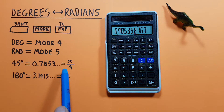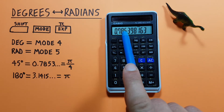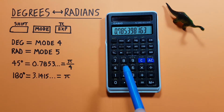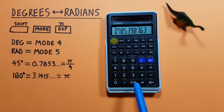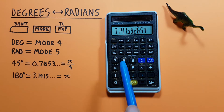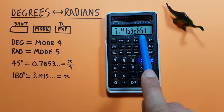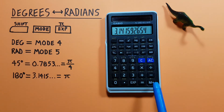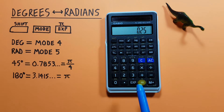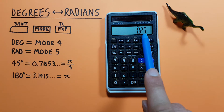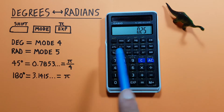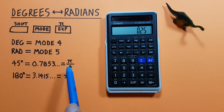But what if we want it more in pi fraction format? To do that we can divide our decimal radians by pi. So we go divided by shift and then pi, press equals, and we get a result of 0.25, which we should know is the same as 1 quarter, or in this format pi over 4.